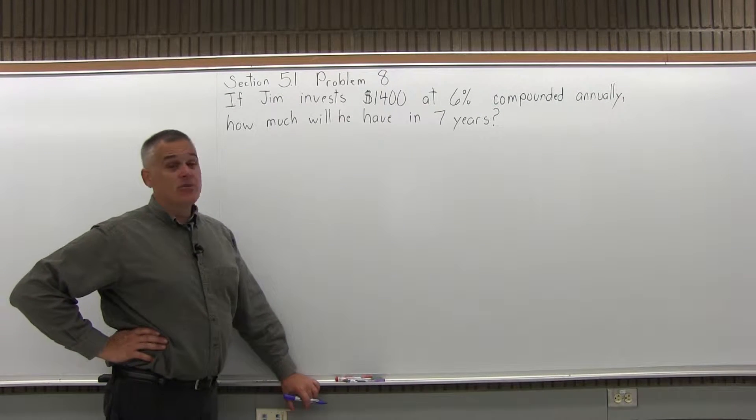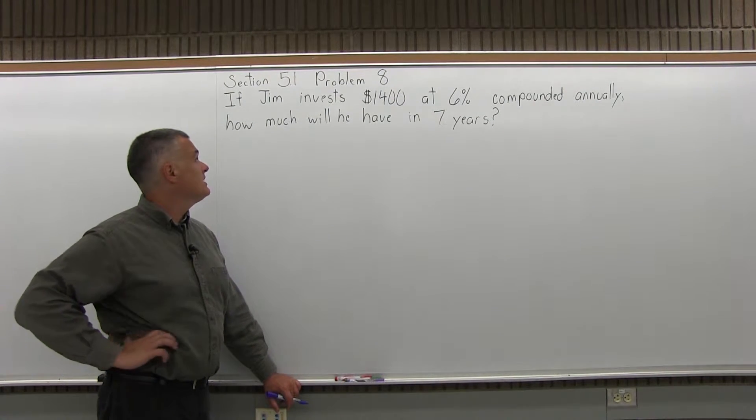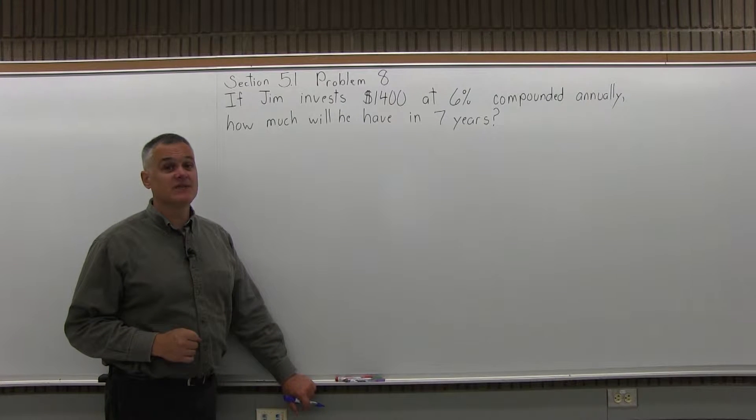This is Section 5.1, Problem 8. It says, if Jim invests $1,400 at 6% compounded annually, how much will he have in 7 years?